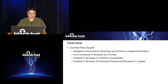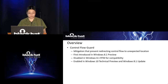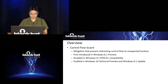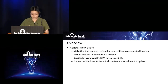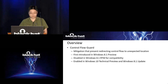This is the overview. Control Flow Guard is a mitigation that prevents redirection of control flow to unexpected locations. It's not a brand new feature — it was first introduced in Windows 8.1 preview, but disabled in RTM for compatibility reasons. Microsoft then enhanced that feature and enabled it in Windows 10 Technical Preview and Windows 8.1 Update 3.